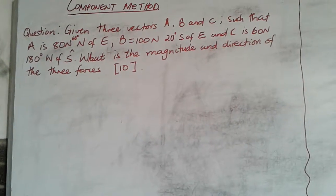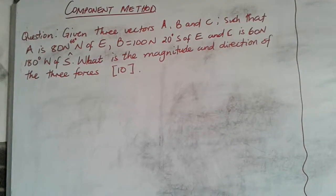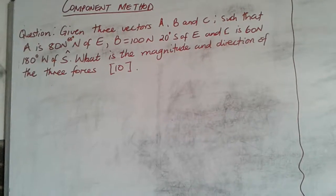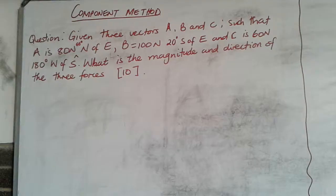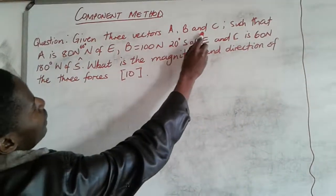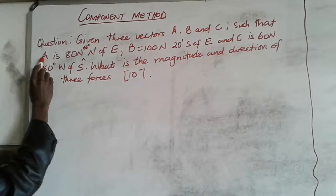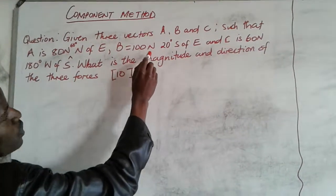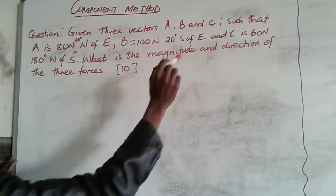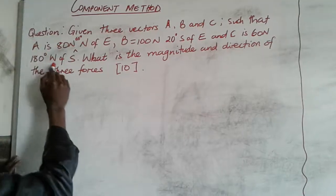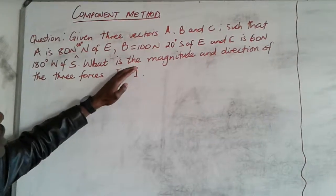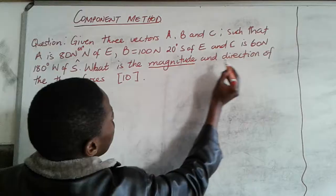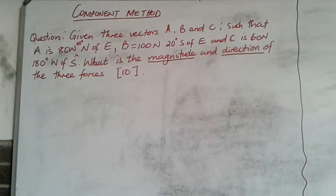Nice to meet you once again, friends. Today we're going to be discussing the component method of solving given vectors. For example, given three vectors A, B, and C such that A is 80 newtons 65 degrees north of east, B is 100 newtons 20 degrees south of east, and C is 60 newtons 180 degrees west of east — what is the magnitude and direction of the three forces?